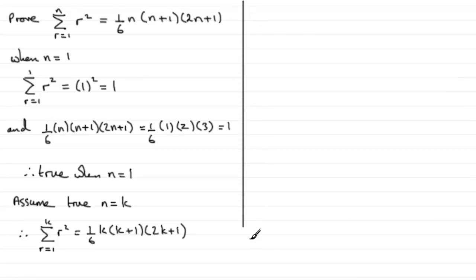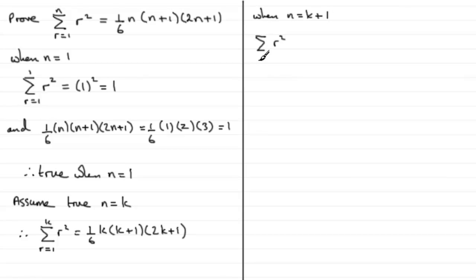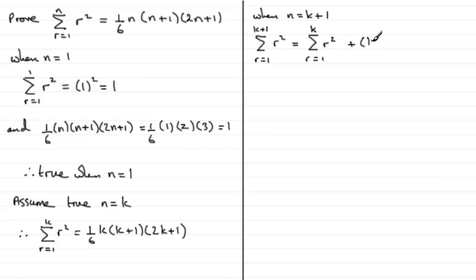Now that we've assumed it's true for some particular value of n, we need to show that it's true for n equals k plus 1. When n equals k plus 1, we have the sum of r squared from r equals 1 to k plus 1. This is exactly the same as the sum of r squared from 1 to k, plus the last term — the k plus 1th term — which is simply k plus 1 all squared.